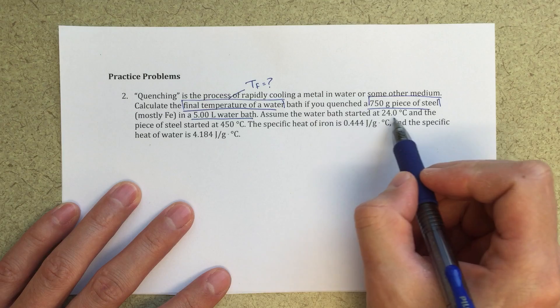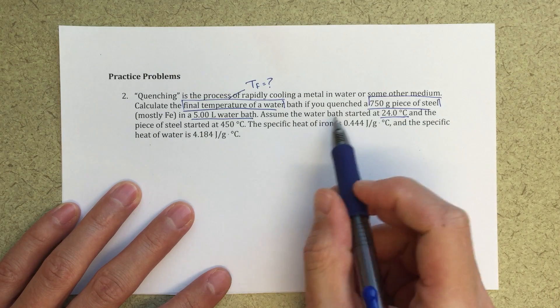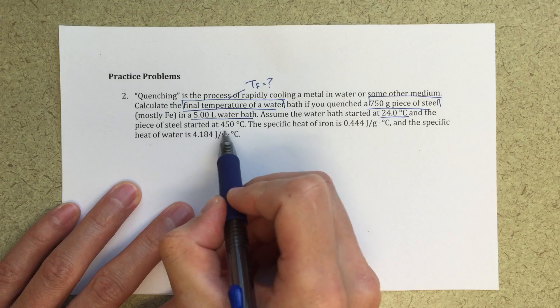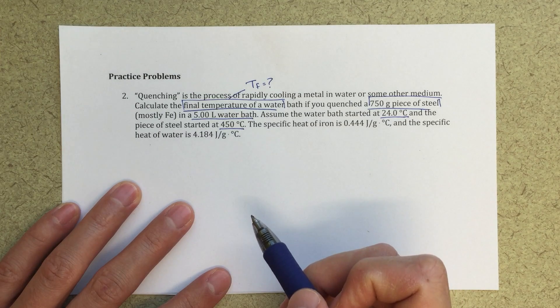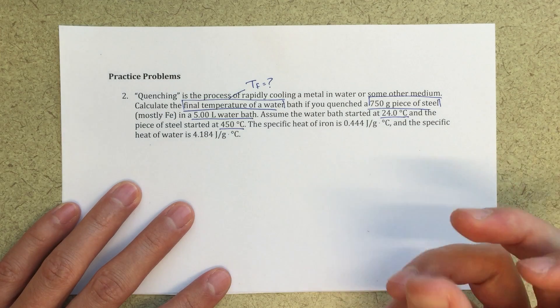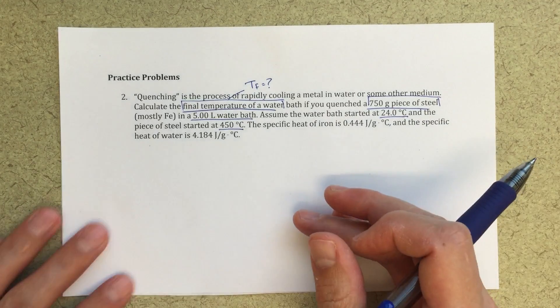We've got an initial temperature of the water bath, the water bath starts at 24 degrees Celsius and we've got an initial temperature for a piece of metal, 450 degrees Celsius, so a really hot piece of metal and we're going to dump it into our water bath and we're going to transfer energy.